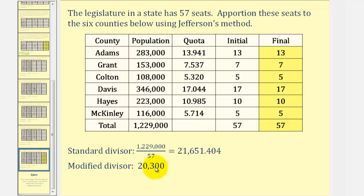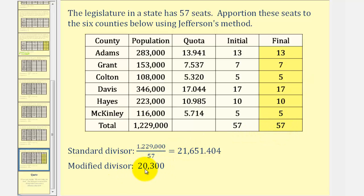Let's try 20,300. Using a divisor of 20,300, we calculate the quotas and remove the decimal part, giving us 13, 7, 5, 17, 10, and 5, which sums to 57 seats. So we're finally done, and this is the final allocation using Jefferson's method. The challenge of Jefferson's method is finding the correct divisor so that once we calculate the new quotas and remove the decimal part, the allocation sums to the number of seats available.